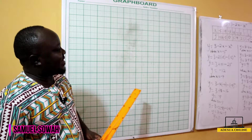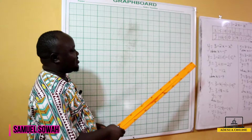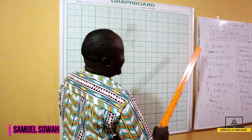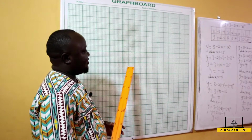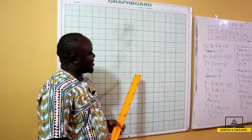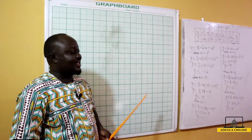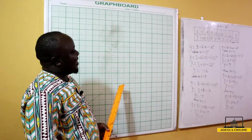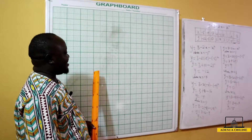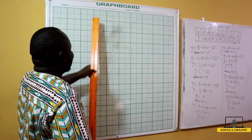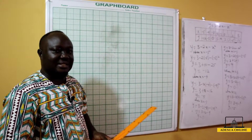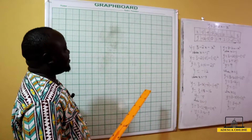After getting our values of x and the corresponding values of y, we are going to plot the graph. We are told to use two centimeters to one unit on the x-axis and two centimeters to two units on the y-axis. Some students just go to the middle and start — we don't do that.